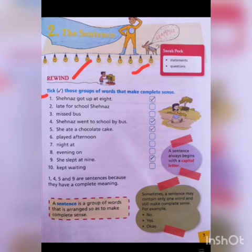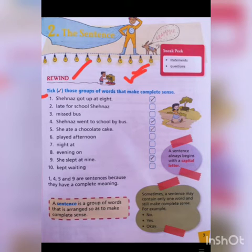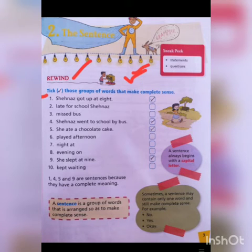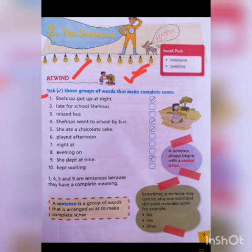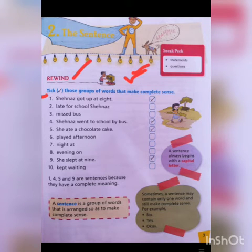Write a tick on those groups of words that make complete sense — meaning, put a tick on the group of words that give a complete meaning. The first sentence is: 'Shahnaz got up at 8.' Shahnaz woke up at 8 o'clock. So, this is a complete sentence — I will put a right mark here.